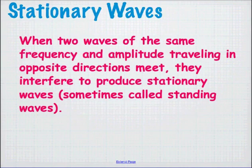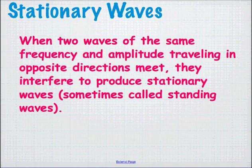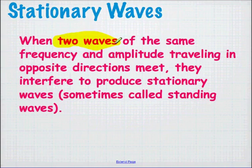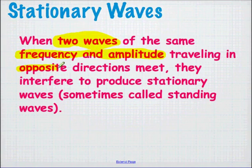Stationary waves. When two waves of the same frequency and amplitude travelling in opposite directions meet, they interfere to produce stationary waves. An important concept is that we're always looking at two waves — so if we're setting waves up on a string, there are actually two waves: one going down it and one coming back from a reflection. There must be the same frequency and amplitude for proper standing waves, and they travel in opposite directions, so normally we use some sort of reflection to set that up.